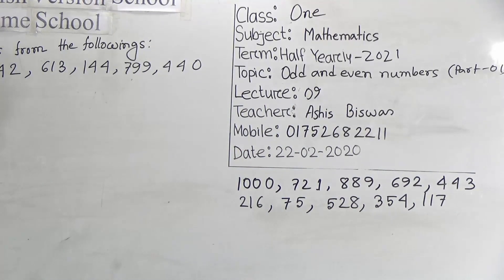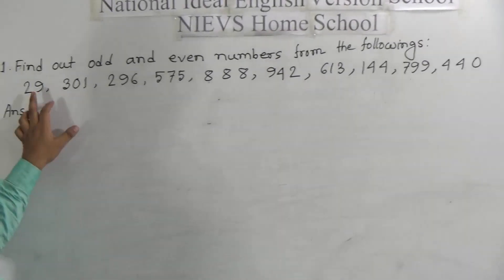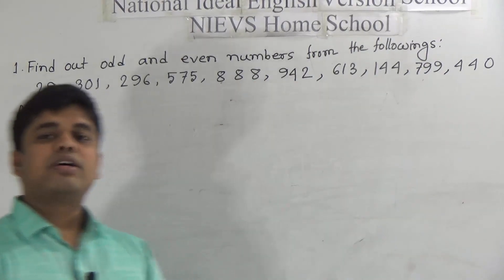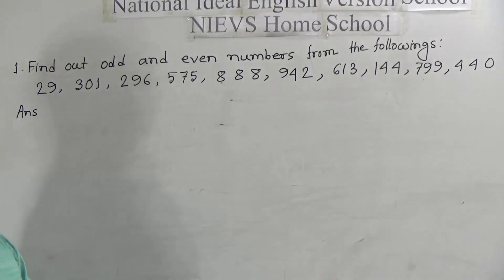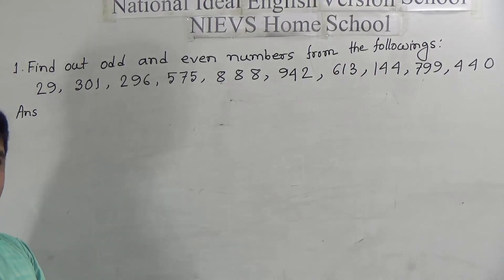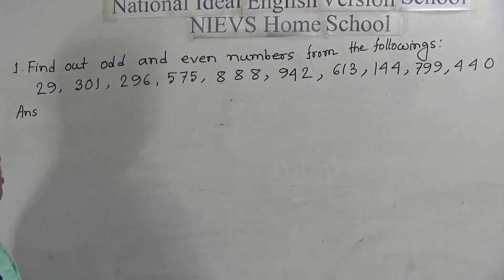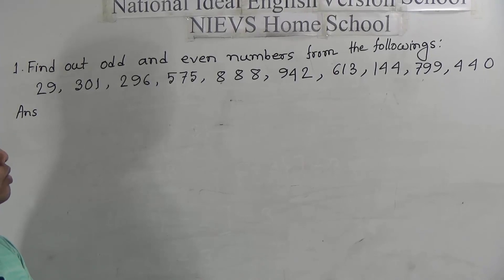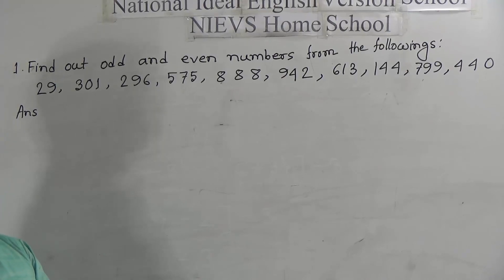At first we read the question: find out odd and even numbers from the following. Some numbers are given: 1, 2, 3, 4, 5, 6, 7, 8, 9, and 10. So 10 numbers are given. From these 10 numbers, some are odd and some are even. We need to separate the odd numbers and even numbers from these whole numbers. Before starting, we need to know what odd numbers and even numbers are.